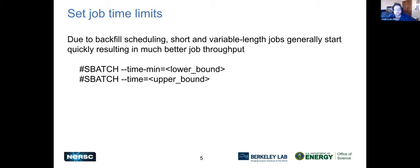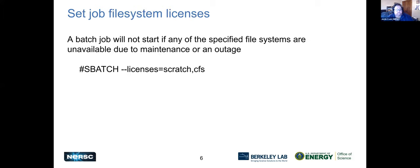Due to the backfill scheduling that SLURM uses at NERSC, if you use a short or variable-length job, you can get better results by setting time limits in your batch script — this sets a minimum and an upper bound. Also, if maintenance is happening on file systems and you don't want your job running, set the licenses for scratch and CFS options. Those are all documented.